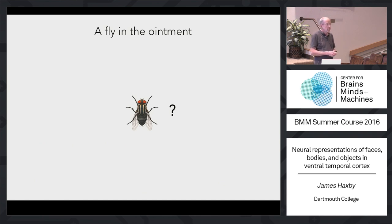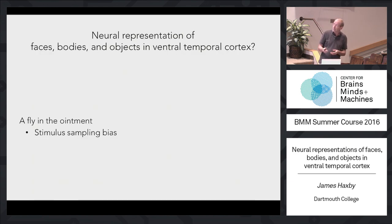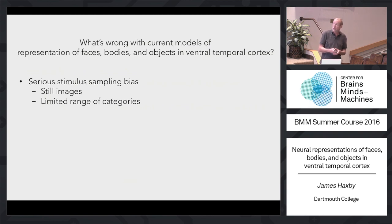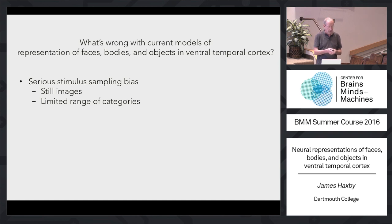But I want to say that I think there's a fly in the ointment — and after the talk, you should decide whether it's a little housefly or something more serious. The first problem I want to talk about is the stimulus sampling bias: almost all studies use still images of faces and objects with a very limited range of categories — faces, bodies, some animals — and very few studies have used dynamic images and looked at the information content in actions.